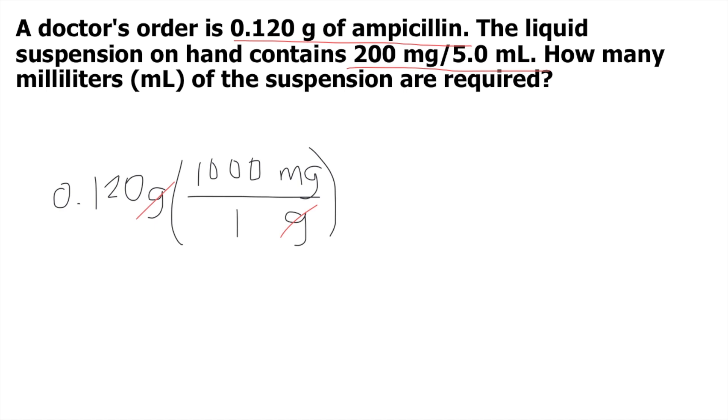From milligrams, we will convert to mL. Put another parenthesis for the next conversion. We have milligrams, so put it below. We want to convert to mL, so put mL on top. According to the given, 200 milligrams per 5 mL. Put those numbers in the parenthesis: 200 milligrams below and 5 mL on top.